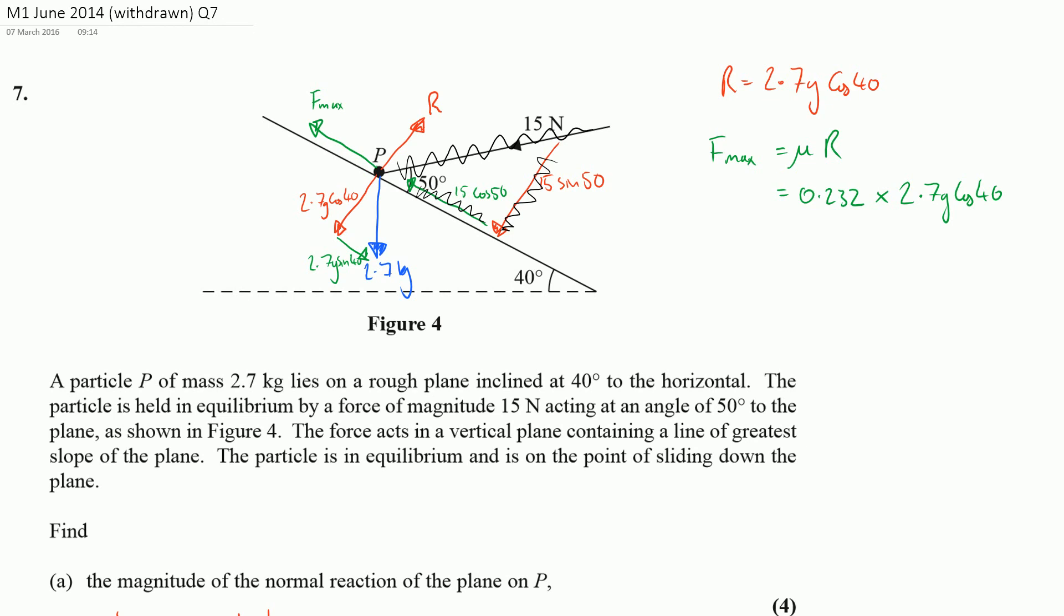Now, if I work that out, that comes out to be something around the 4.7 mark, so somewhere around 4.7 Newtons. So the maximum value friction can take is 4.7 Newtons.